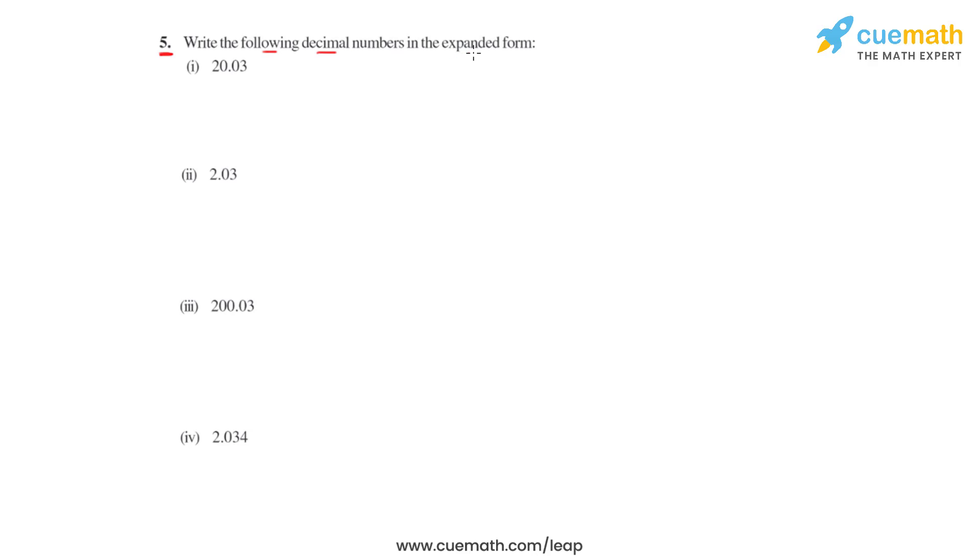Question number 5 says to write the following decimal numbers in expanded form. We'll be starting with the first part where the decimal number is 20.03.